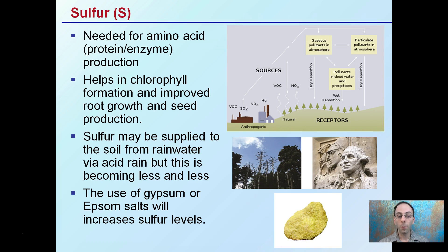If you use gypsum or Epsom salts, this will increase sulfur levels — those are ways to add it. So keep in mind that is the third of the secondary nutrients, and just another one to keep an eye out for in your plants.